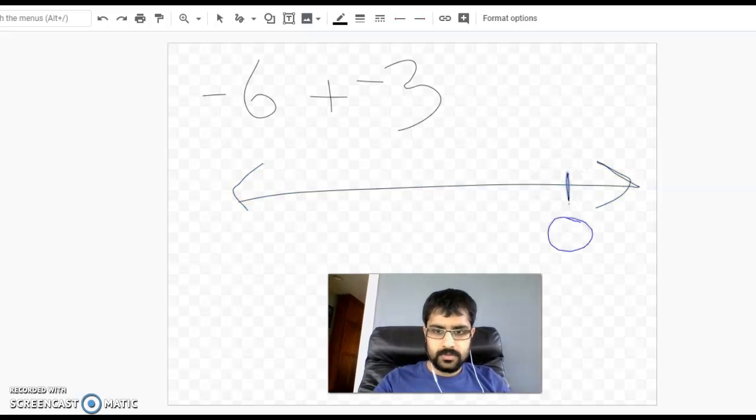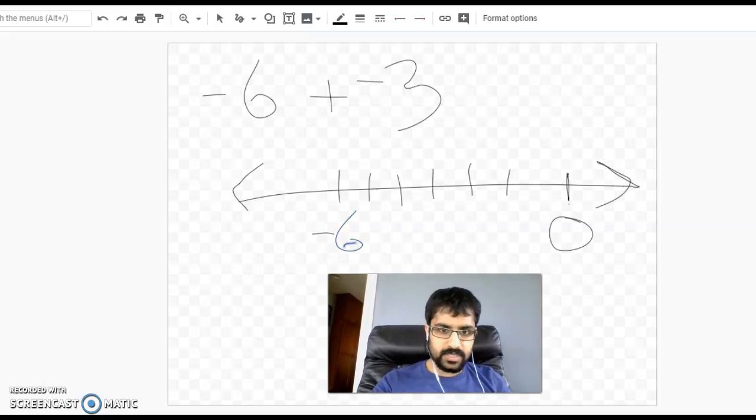Here's my 0. Negative 1, negative 2, negative 3, negative 4, negative 5, negative 6. One way I can think about this is that if I'm subtracting 3, I'm just moving to the left on this number line. If I'm adding a negative 3, same thing. I'm going negative by 3 ticks.